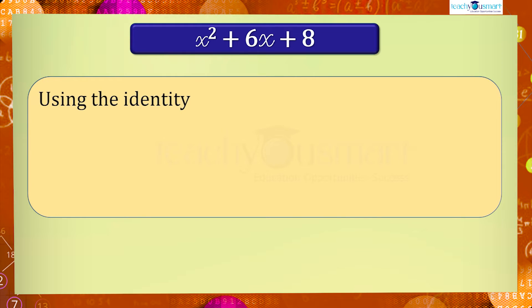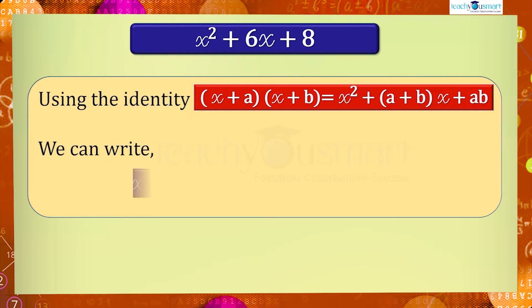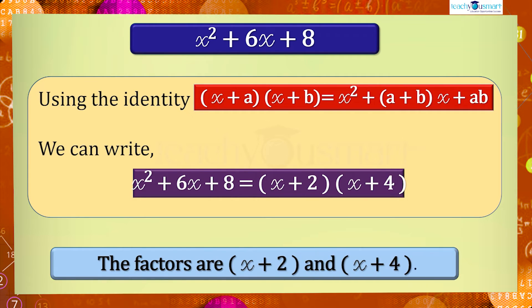Using the identity (x + a)(x + b) = x² + (a + b)x + ab, we can write x² + 6x + 8 = (x + 2)(x + 4). Therefore the factors are (x + 2) and (x + 4).